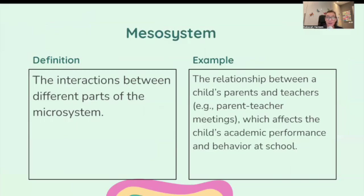Mesosystem: this is the interactions between different parts of a microsystem. For example, the relationship between a child's parents and teachers — such as during a parent-teacher meeting — affects the child's academic performance and behavior in school.